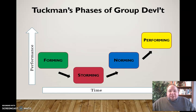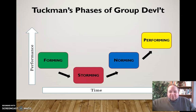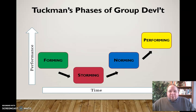He called these stages forming, storming, norming, and performing. Groups progress over time, but they will not move through these as one simple flow. They'll move forward and backward, get stuck in one stage, and maybe not ever get out of it. It just depends on the group how much you progress and how you stay in these stages.